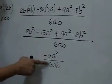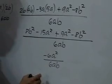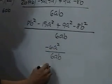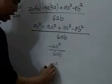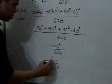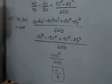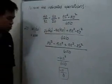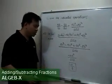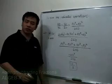We can divide negative 6 by 6 and we have negative 1. a squared divided by a is a, and then we have b in the denominator. So the result of these operations on these three fractions is negative a over b.